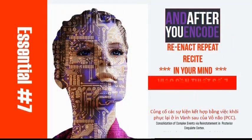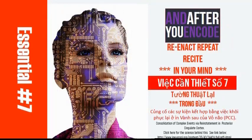Essential number seven: after encoding, reenact, repeat, and recite in your mind — a consolidation of complex events via a reinstatement or recreation in your brain.